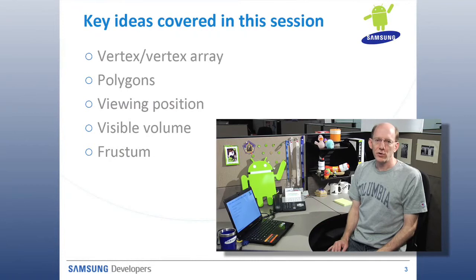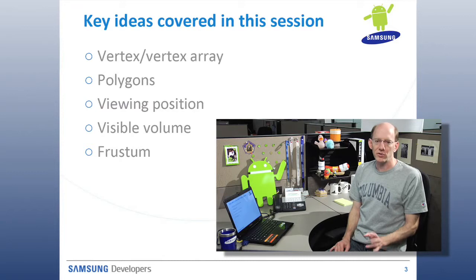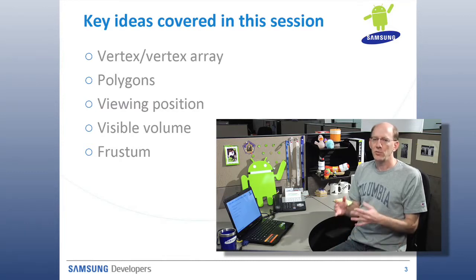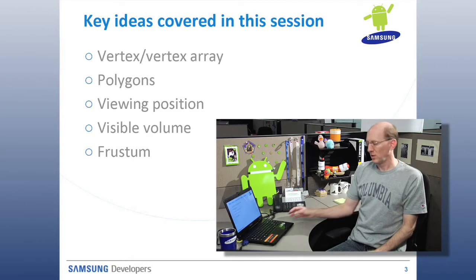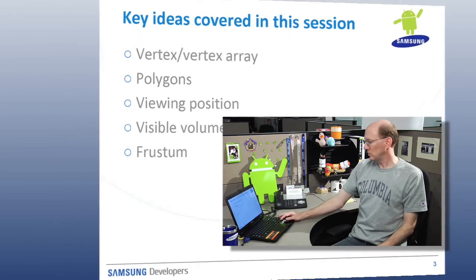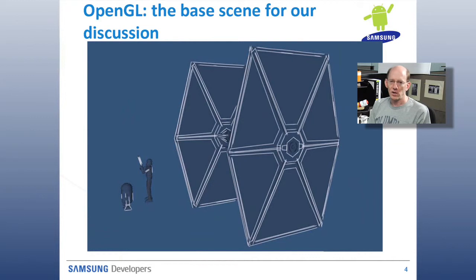The key concepts that we're going to cover in this video are vertices and vertex arrays, polygons, viewing position, visible volume, and this thing called a frustum — which is kind of a weird word, but that's the term that people use.